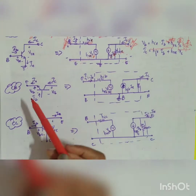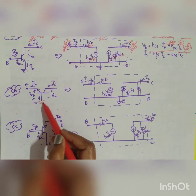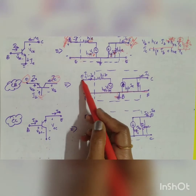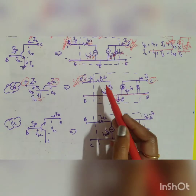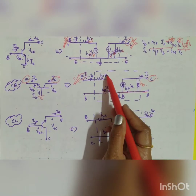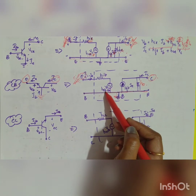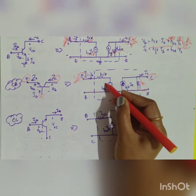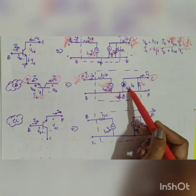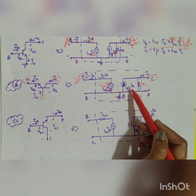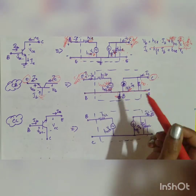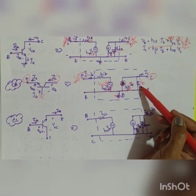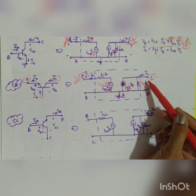For the CB (common base) configuration, the base is grounded, emitter is the input, and collector is the output. The parameters become hib, hrb, hfb, and hob. The voltage source is hrb·Veb, the current source is hfb·Ie. Since the current flows in the opposite direction, the arrow mark changes. Output admittance is hob.